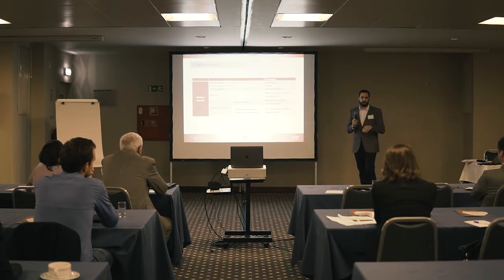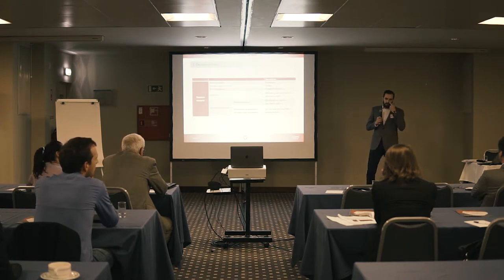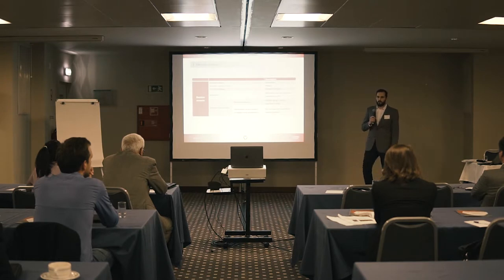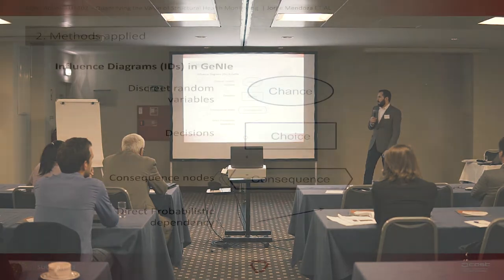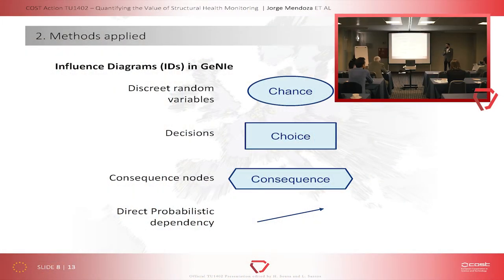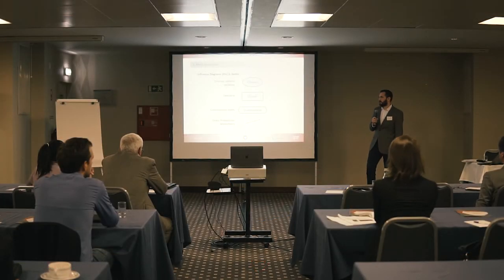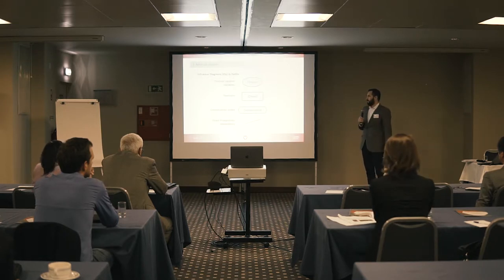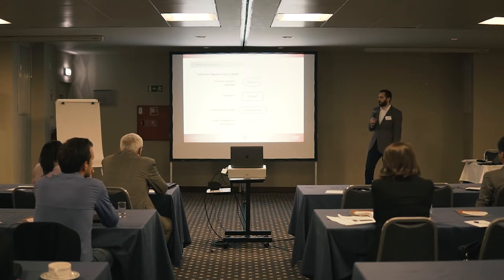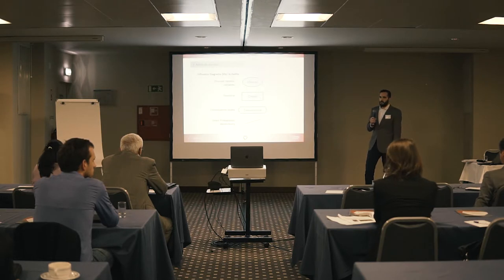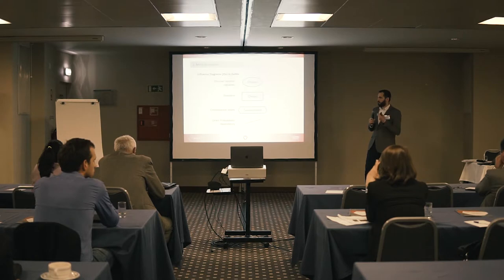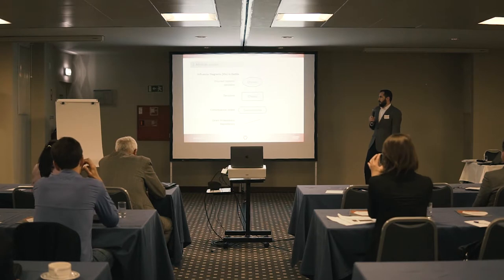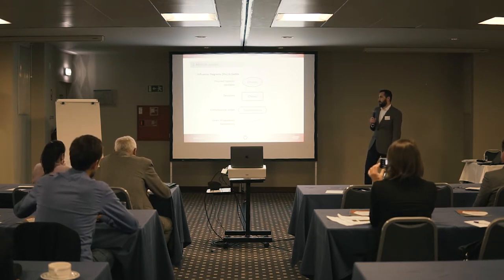Monopiles are usually designed and grouped into clusters with similar soil characteristics, dimensions, heights, and water depths. Within a cluster, we can use information from one monopile to extrapolate or lower uncertainty for others. The methodology applied uses Bayesian networks. The main components of an influence diagram used to represent the decision scenario are: chance nodes for discrete random variables, choice nodes for decisions, consequence nodes to assess utility and decide on better strategies, and arcs implying direct probabilistic dependency.